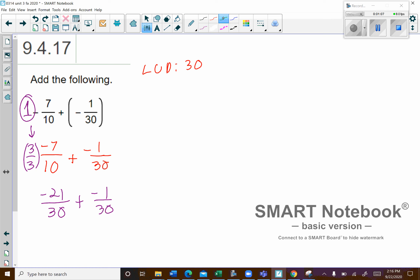Now once I have the denominators matching, then you just go ahead and complete this part of the problem, and you keep that common denominator. So it's going to be negative 21 plus negative 1 all over 30.